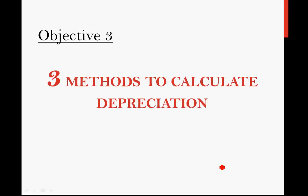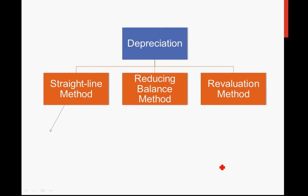We come to our third objective: to introduce the different methods to calculate depreciation. There are three methods in your textbook. Number one: straight-line method. Number two: reducing balance method. And number three: revaluation method. For the straight-line method, there are two formulas. The first formula is rate times cost — where rate is your percentage given by the question. The second formula is original cost minus scrap value, divided by expected useful life.